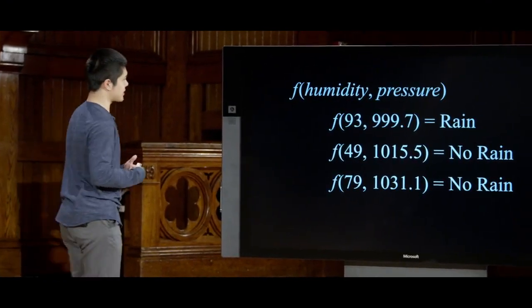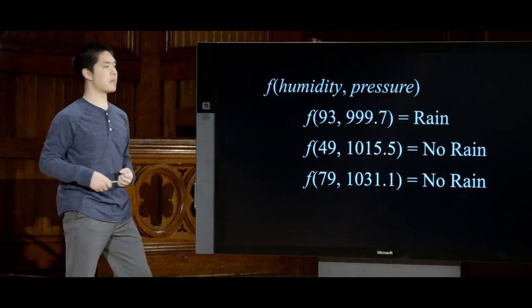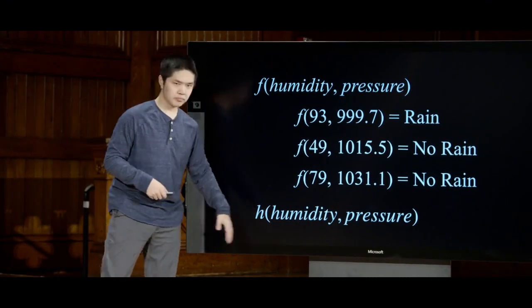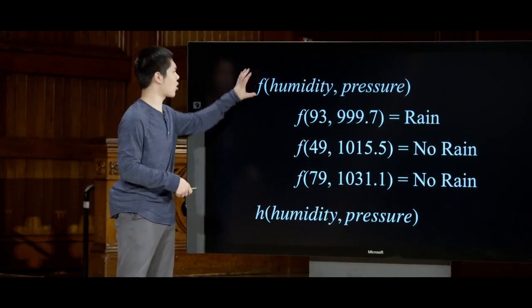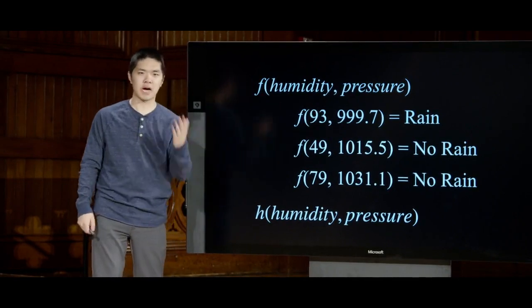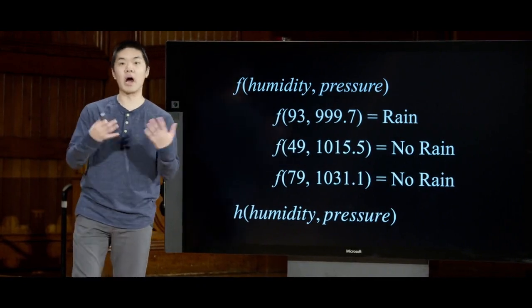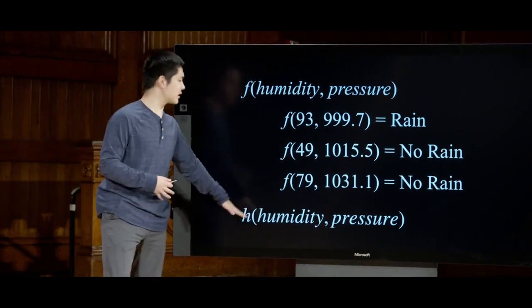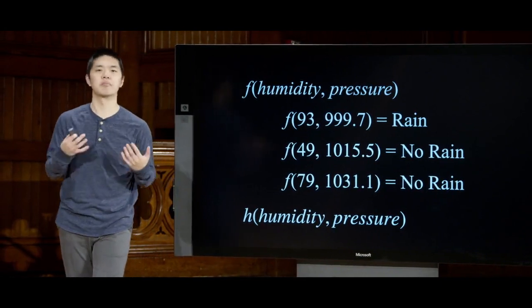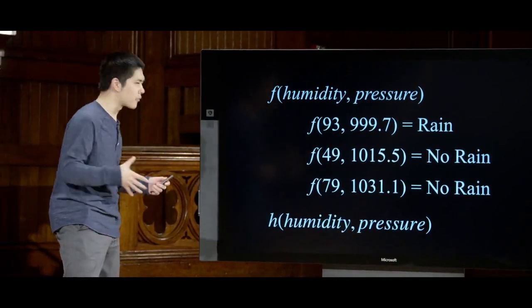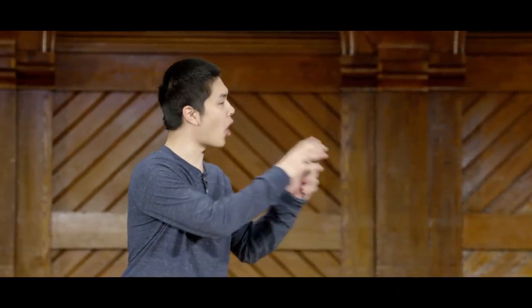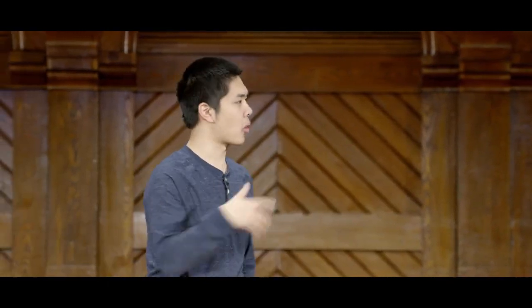We would like to come up with a hypothesis function h, which is going to try to approximate what f does. We want h to take the same inputs and produce an output — rain or no rain — and ideally we'd like these two functions to agree as much as possible. So the goal of the supervised learning classification task is to figure out what that function h looks like — how can we estimate, given all of this data, what category or label should be assigned to a particular data point?